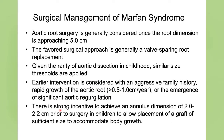In kids, there's a strong incentive to achieve an aortic annulus dimension of at least 2 to 2.2 centimeters prior to surgery to allow placement of a graft of sufficient size to accommodate body growth. If the surgery is done at a smaller annulus size, we can only put in a smaller graft, essentially committing that child to a revision sometime during growth.